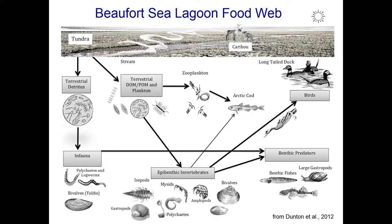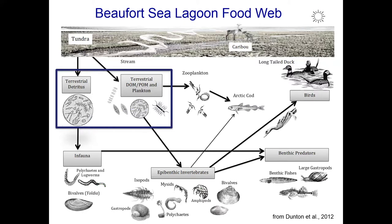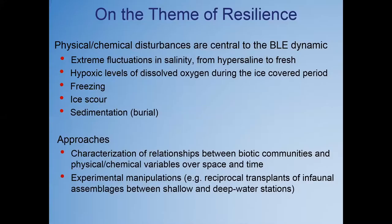We've put together a food web, updated now to include the microphytobenthos and benthic microalgae as important sources of carbon in these systems. We also know this from looking at the degradation products of chlorophyll from the sediments — we see that it's actually being grazed by metazoans and by bacteria. This is an exciting area that we're going to spend more time with under this LTER.